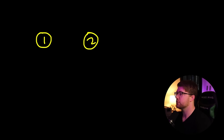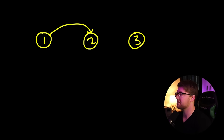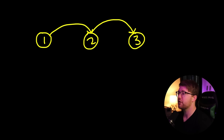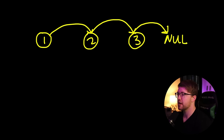A singly linked list, like it sounds, is pretty simple. All you really have is all these different nodes, and these nodes have different data in them. Node one has data one, node two has data two, and node three has data three. These list nodes are linked by pointers that point to the next node in the list. This arrow represents a pointer to the next element. At the end of the list, there's a pointer that points to null, which determines that we are at the end of the list.